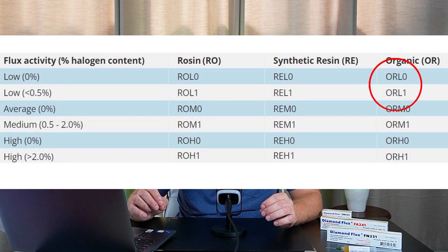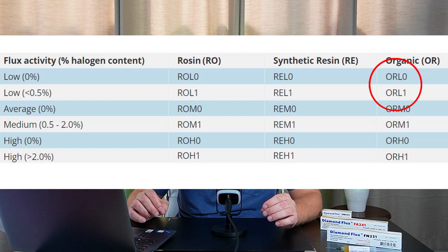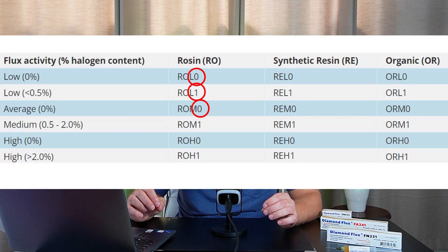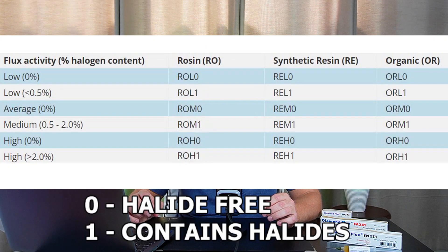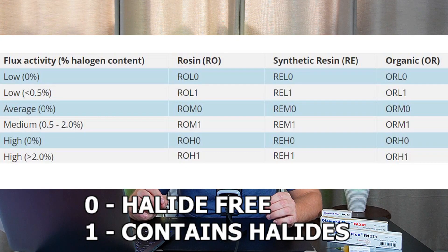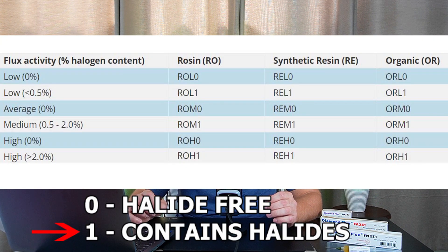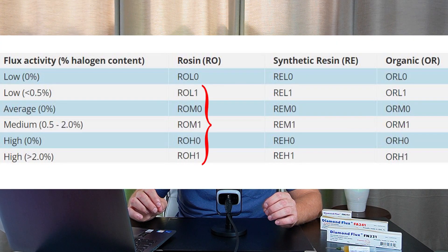ORL0 and ORL1 are more common in industrial use because they are easy to clean with water-based washing systems. The last digit — zero or one — in the abbreviation refers to the amount of halides in the soldering flux. Zero means halide-free; one means it contains halides. This last digit directly impacts how well the soldering flux removes oxide films from PCB pads and components during soldering.